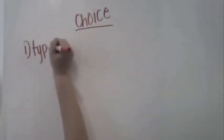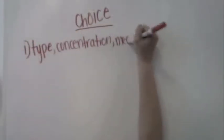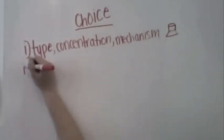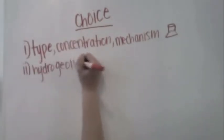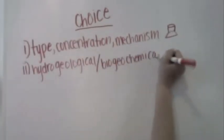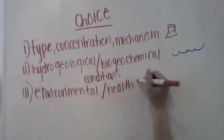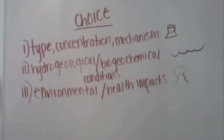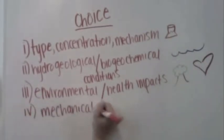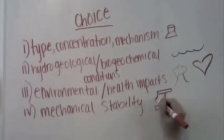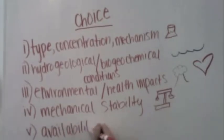The choice of the reactive material is generally influenced by the type of contaminants to be removed, their concentrations, and the mechanisms needed for their removal. The hydrological and biochemical characteristics of the aquifer must be assessed in order to determine the environmental and health impacts, the mechanical stability, and the availability and cost of the material.